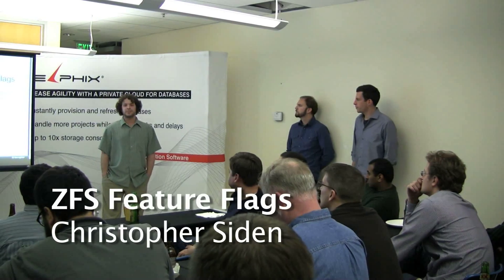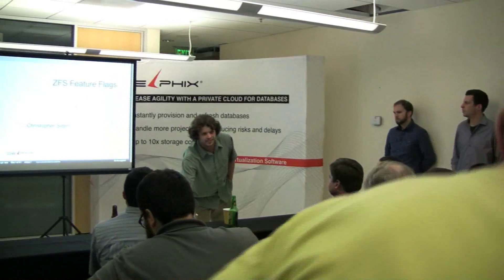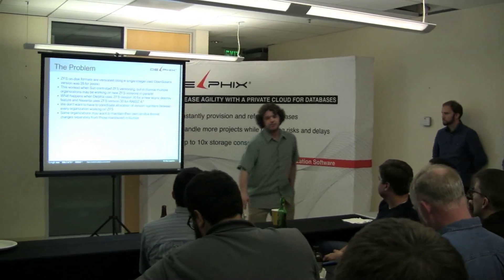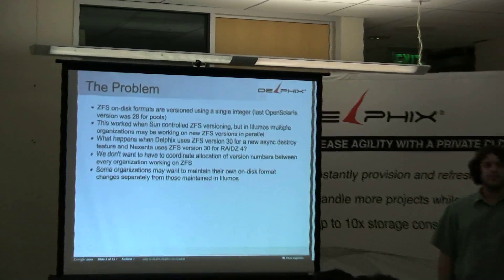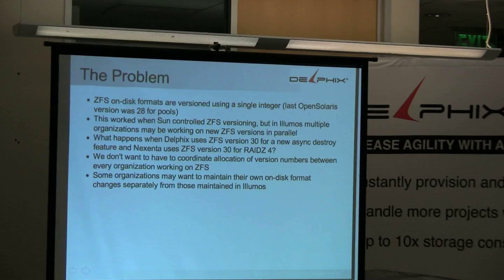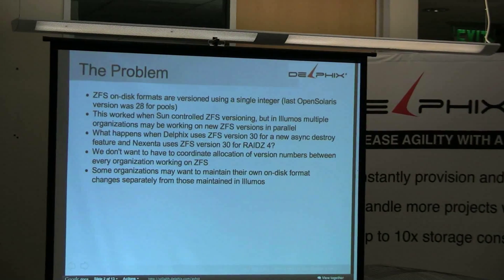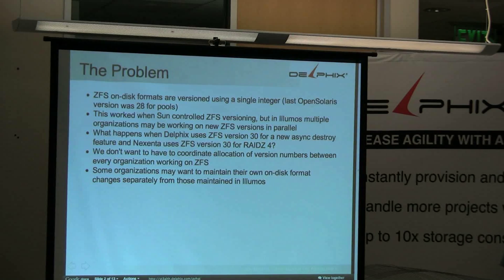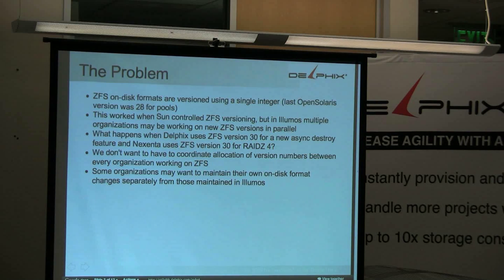I'm going to talk about ZFS feature flags, which you may or may not have heard about if you've been paying attention to ZFS development. The problem this is trying to address is that in the old world, ZFS on-disk formats were versioned with a single integer. In the last OpenSolaris release, for example, that number was 28, and it went up throughout the years whenever they introduced backwards-incompatible changes to the on-disk format.